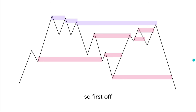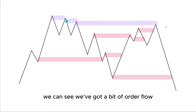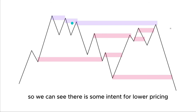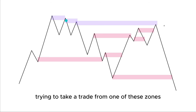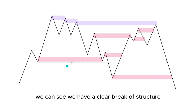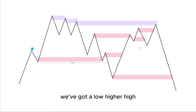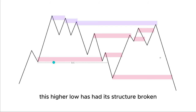Right at the very top, we have these purple zones. We can see there is some order flow pushing into the market here, showing some intent for lower pricing, but at this point it's not guaranteed. Trying to take a trade from one of these zones is going to be very high risk. If we look down here, we can see we have a clear break of structure — a low, higher high, higher low, higher high — and at this point this higher low has had its structure broken.